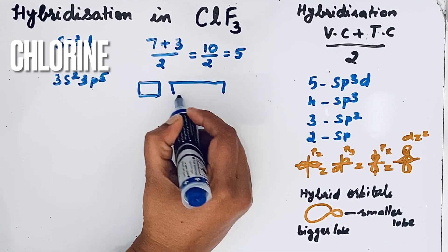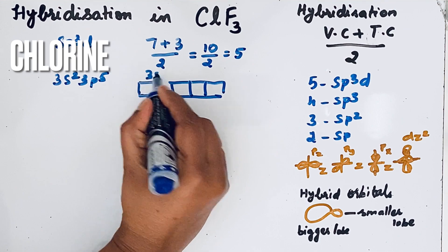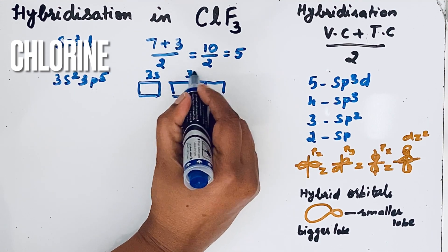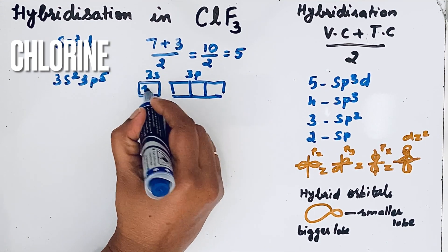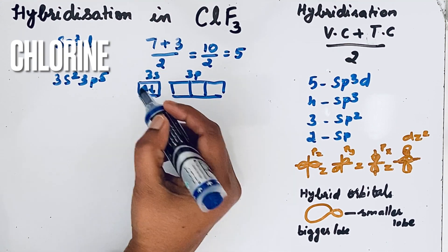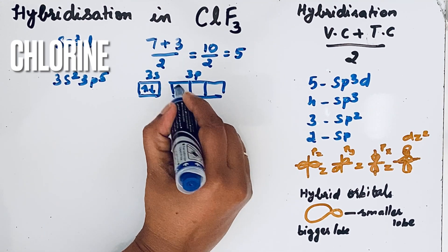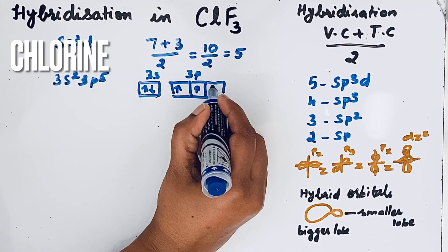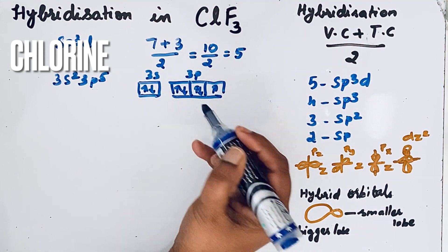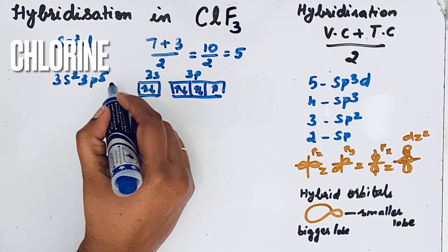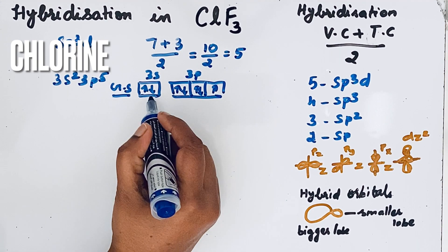In the box diagram, we can show the 3s orbital and the 3p orbital. There are 2 electrons in the 3s orbital and 5 electrons in the 3p orbital. This represents the ground state of chlorine.